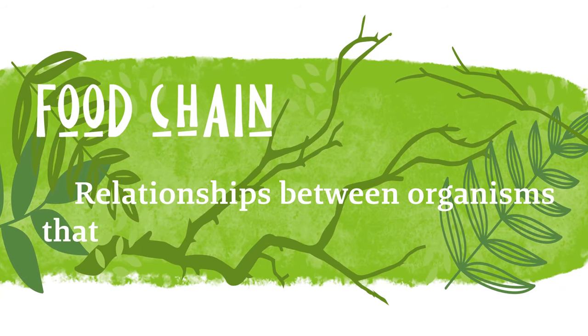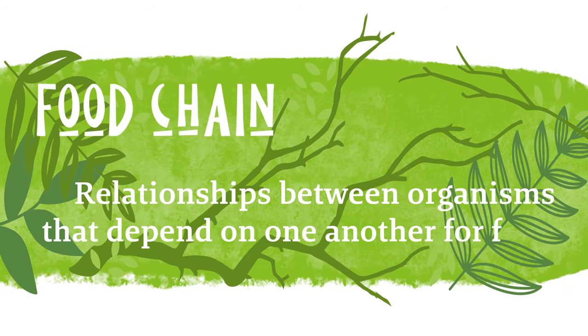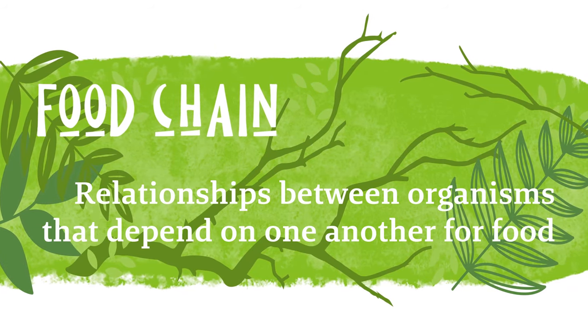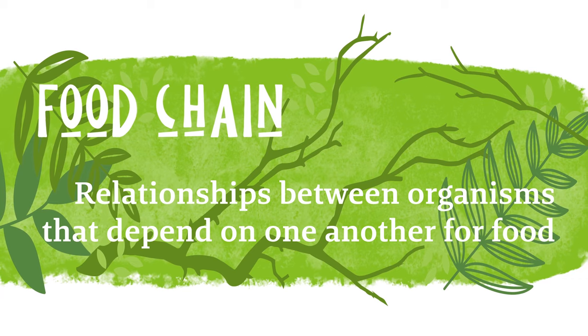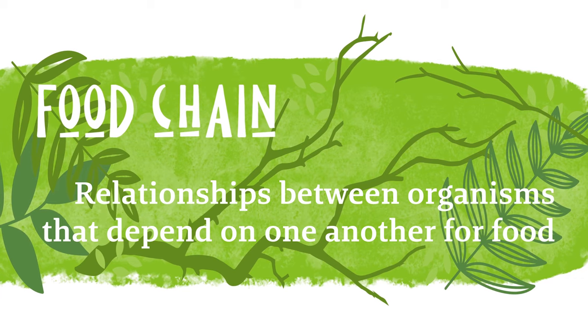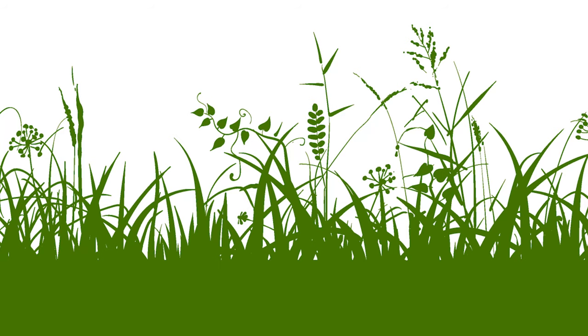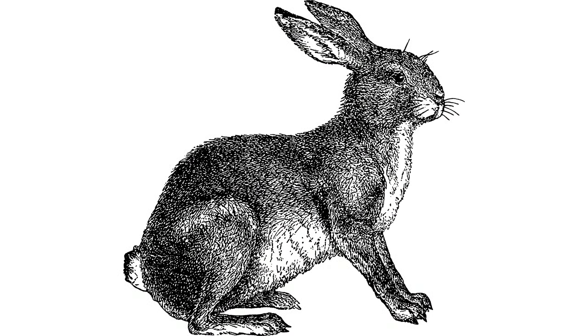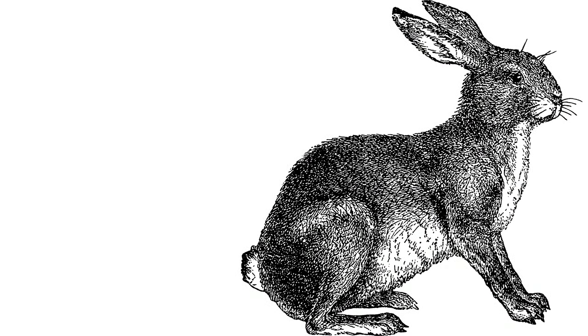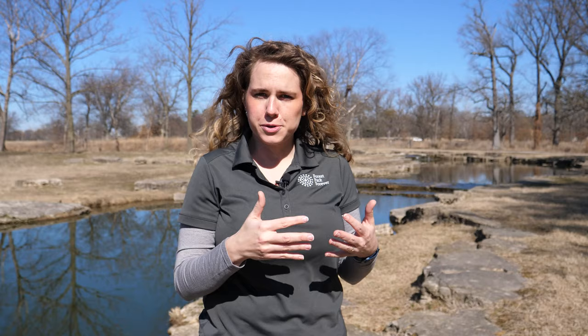The term food chain is one that we use to describe relationships between organisms that depend on one another for food. An example would be grass that gets eaten by a rabbit and then the rabbit being eaten by a hawk. All three of those organisms are part of a food chain.